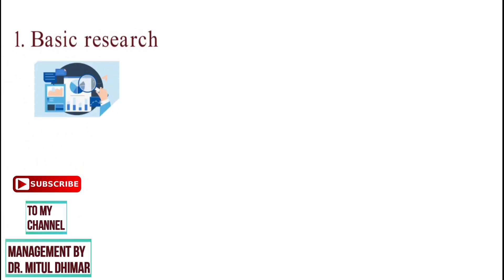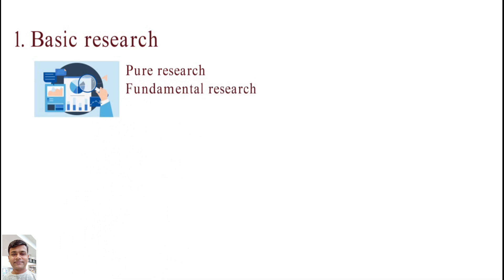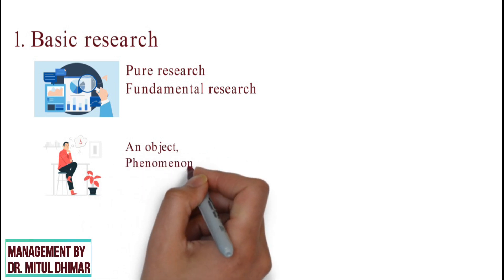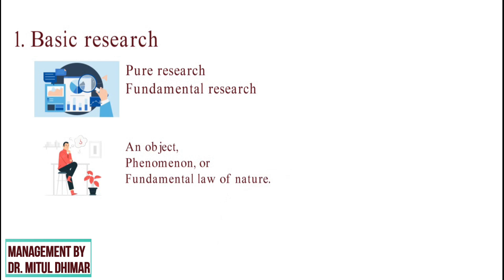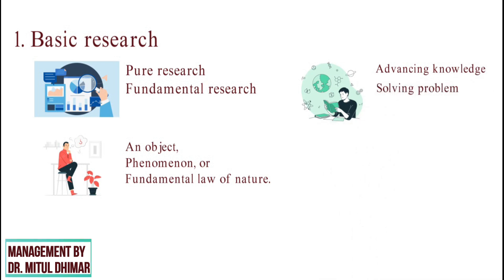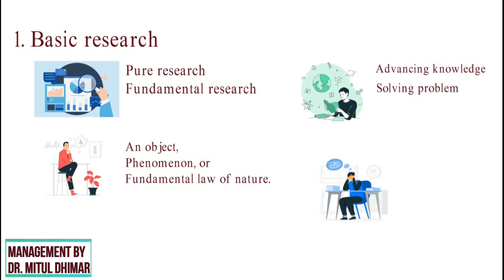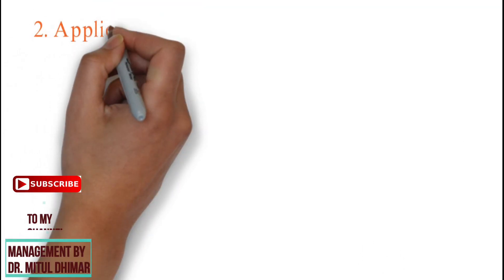Type 1: Basic research. Basic research is also referred to as pure research or fundamental research. It is a type of research approach that seeks to better understand an object, phenomenon or fundamental law of nature. This type of research is primarily focused on advancing knowledge rather than solving a specific problem. For example, a researcher might conduct basic research on how stress levels impact students academically, emotionally and socially.